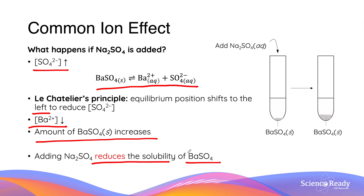Notice that both compounds — sodium sulfate and barium sulfate — contain sulfate as a common ion, hence why this phenomenon is called the common ion effect.